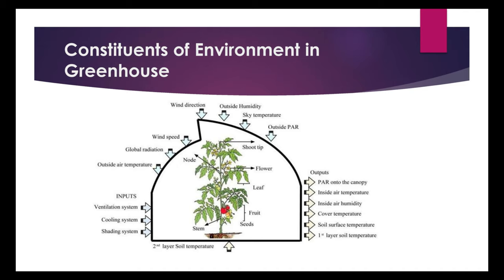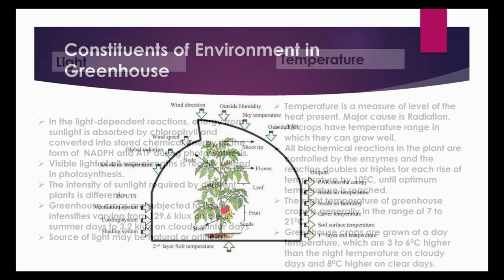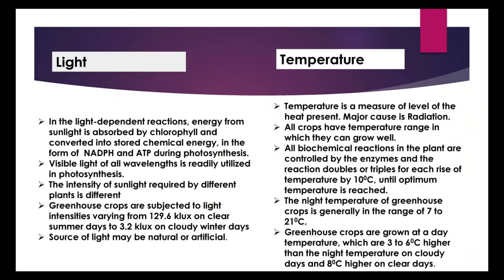Constituents of environment in greenhouse — Light: One of the major environmental constituents of the greenhouse is light. In the light-dependent reactions, energy from sunlight is absorbed by chlorophyll and converted into stored chemical energy in the form of NADPH and ATP during photosynthesis. Visible light of all wavelengths is readily utilized in photosynthesis. The intensity of sunlight required by different plants is different.